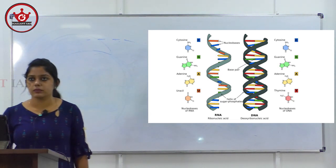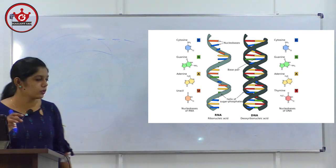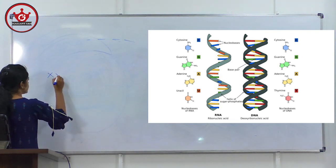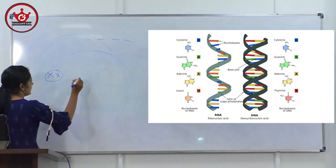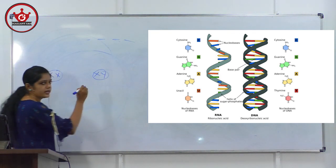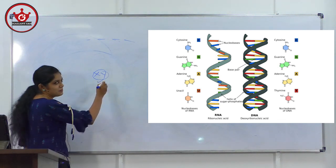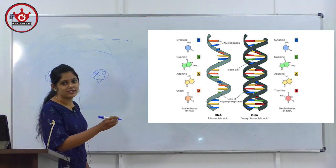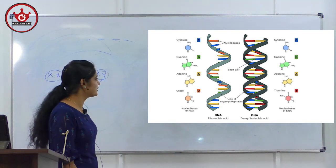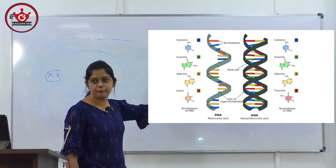Humans have 23 pairs of chromosomes. In females, the sex chromosome is XX; in males, it is XY. Therefore, the sex of the child is determined by the father, not the mother. RNA and DNA are important probable areas.